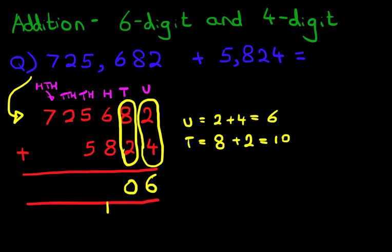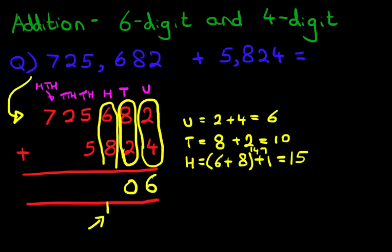Right, now we're going to add the hundreds column. And don't forget the 1 over here. Hundreds is 6 plus 8 plus the 1. Let's put brackets around the first two numbers. What is 6 plus 8? That's right, it is 14 plus the 1 is 15. We've got 1 here and 5 here.